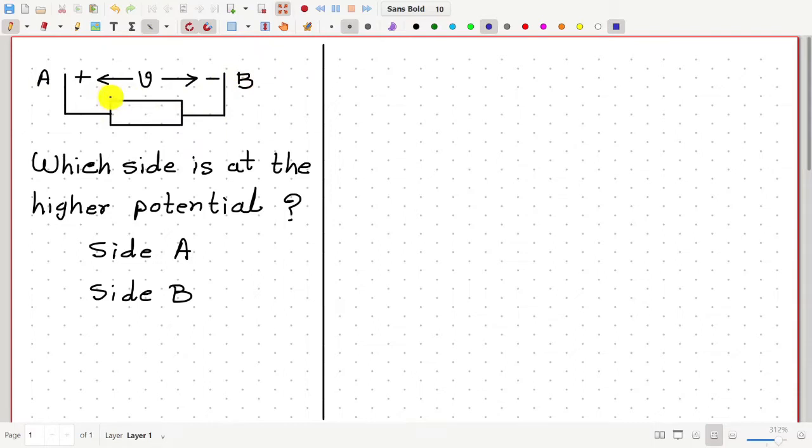The voltage between A and B is labeled with the symbol V with a plus side and a minus side. Let me ask you, which side in this diagram is at the higher potential?